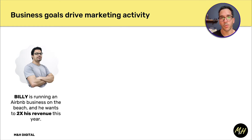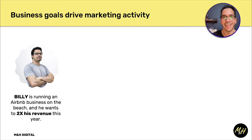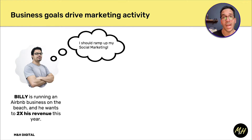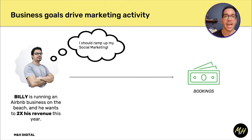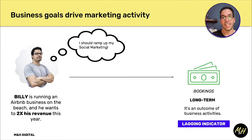To kick off aligning business goals with marketing goals, here's the example of Billy, who runs a beach Airbnb. His goal is to 2x his revenue — he's been doing Airbnb for a couple of years and really wants to ramp it up. He thinks, why not use social media marketing? He sees people going viral and getting millions of views, so why not use social media to take his Airbnb business to the next level? The business goal is to 2x revenue, but specifically he needs to get bookings — book nights equals money.